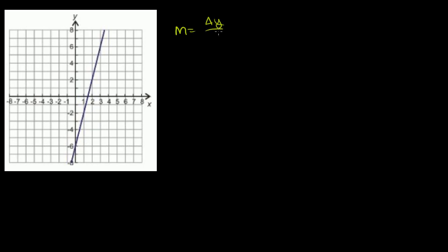Now we have a graph. When our change in x is 1, the change in y looks like exactly 4. So the slope is 4/1 = 4. Looking at the graph, the line intersects the y-axis at y = -6, at the point (0, -6). So b = -6, and the equation of the line is y = 4x - 6.